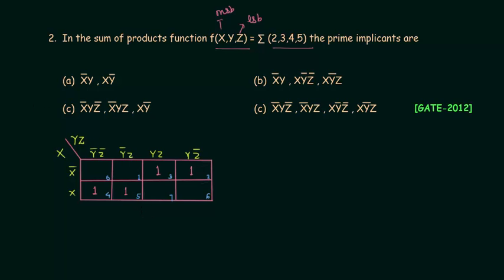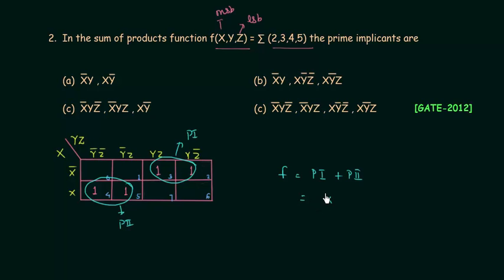Now we can easily make the groups of ones. In the first group I will combine these two ones and call it P1. The function f is simply equal to P1 or P2. From P1 we have X complement and Y. From P2 we have X and Y complement. So the function f is determined and we need to find the prime implicants: X complement Y is the first prime implicant, and X Y complement is the second prime implicant.